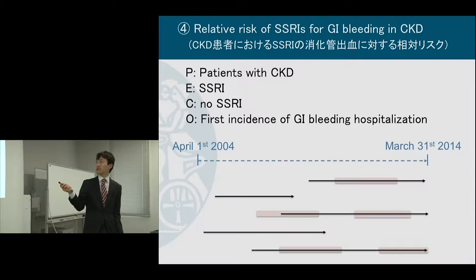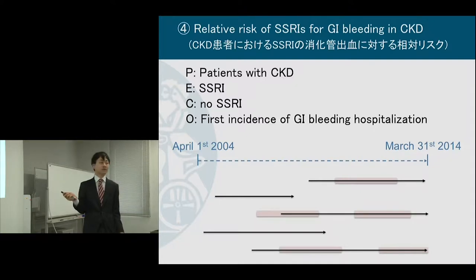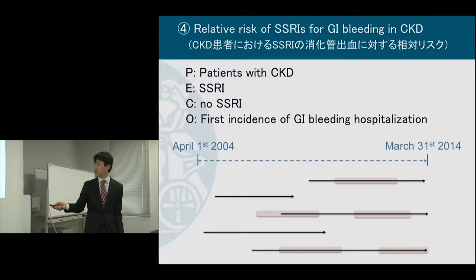Among patients with CKD, comparing SSRI and no SSRI on the first instance of GI bleeding hospitalization. This is the CKD cohort again, and the pink color indicates antidepressant prescription.